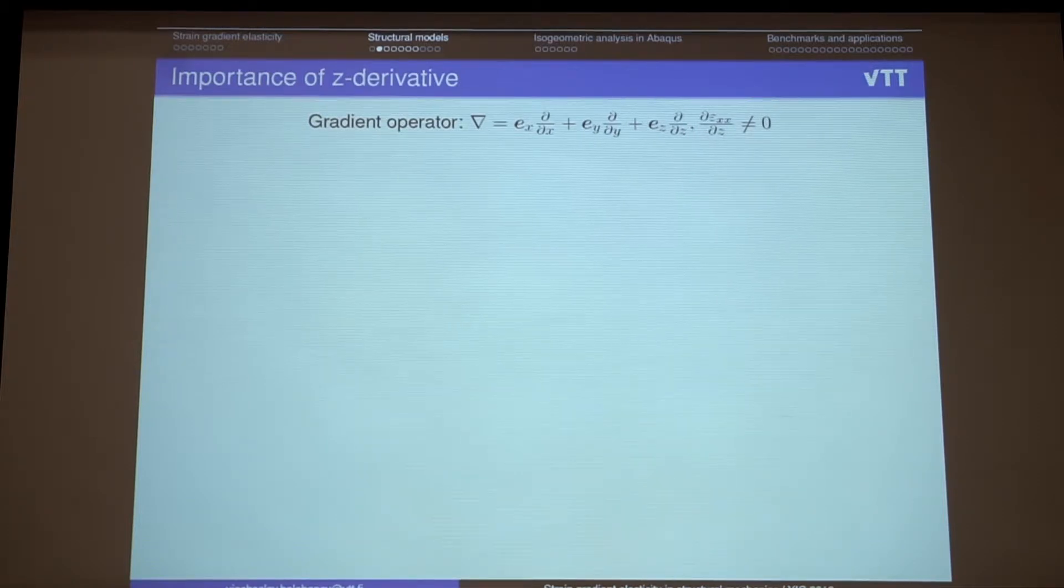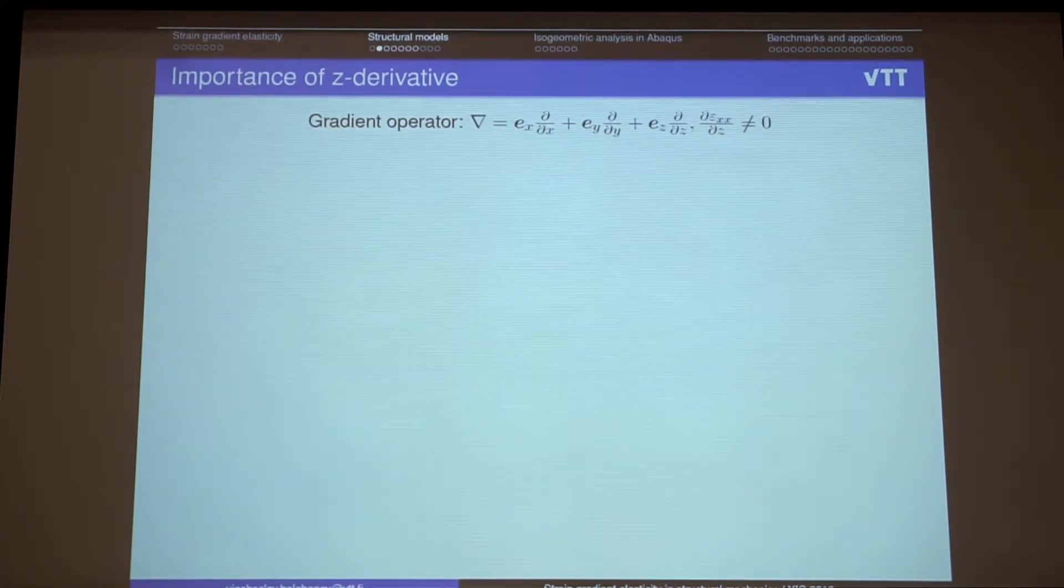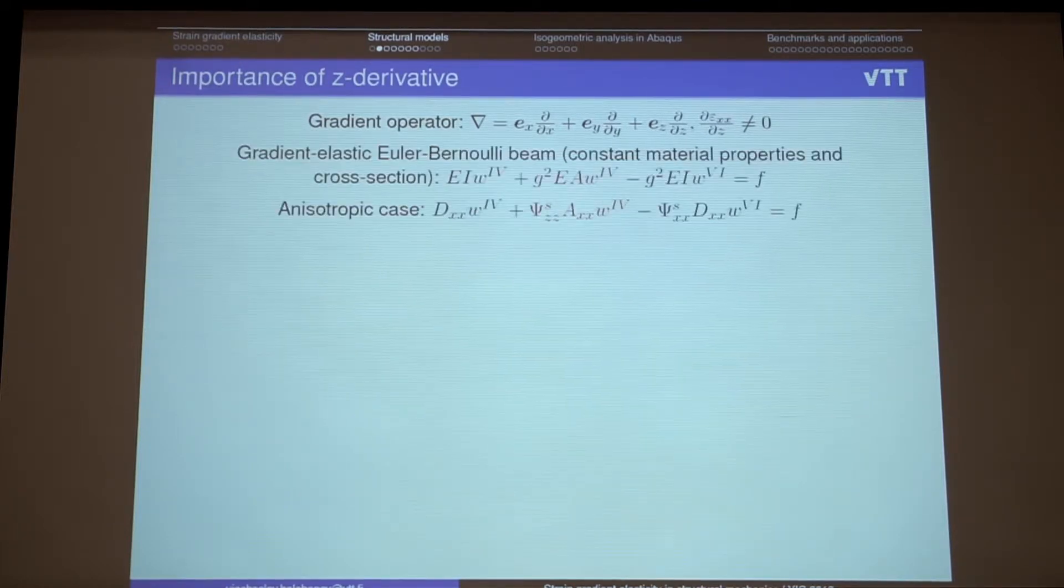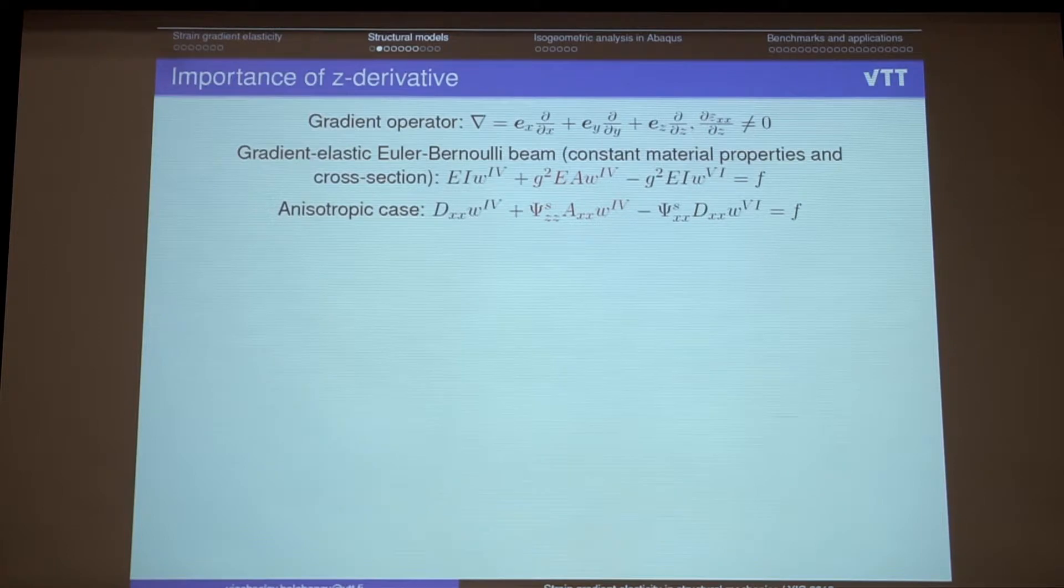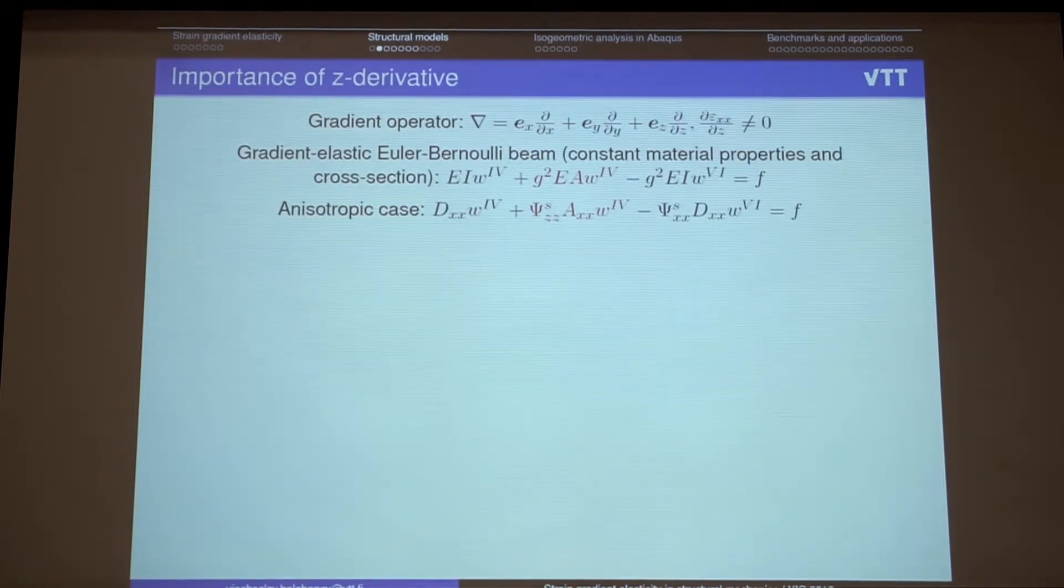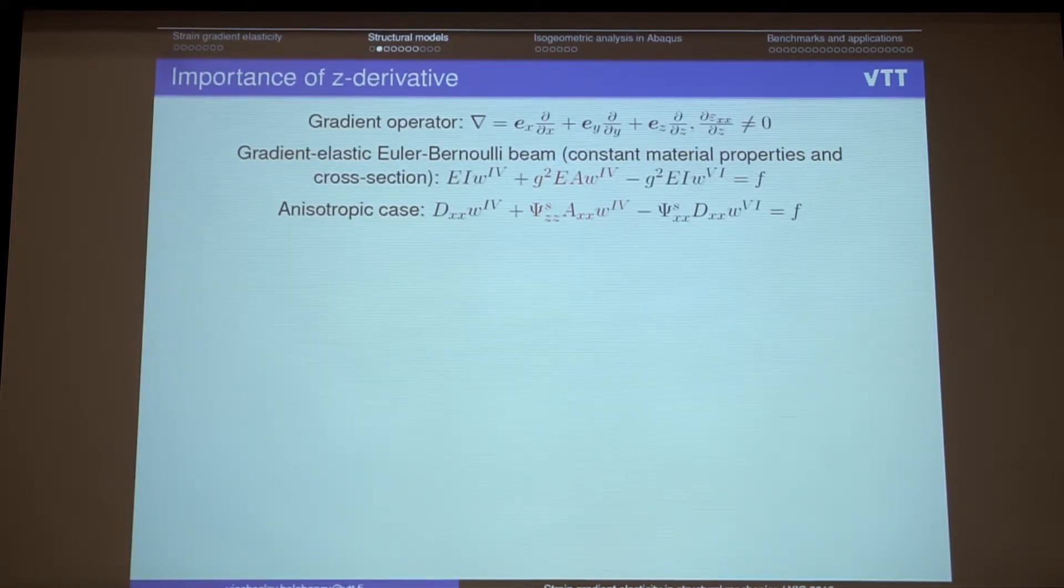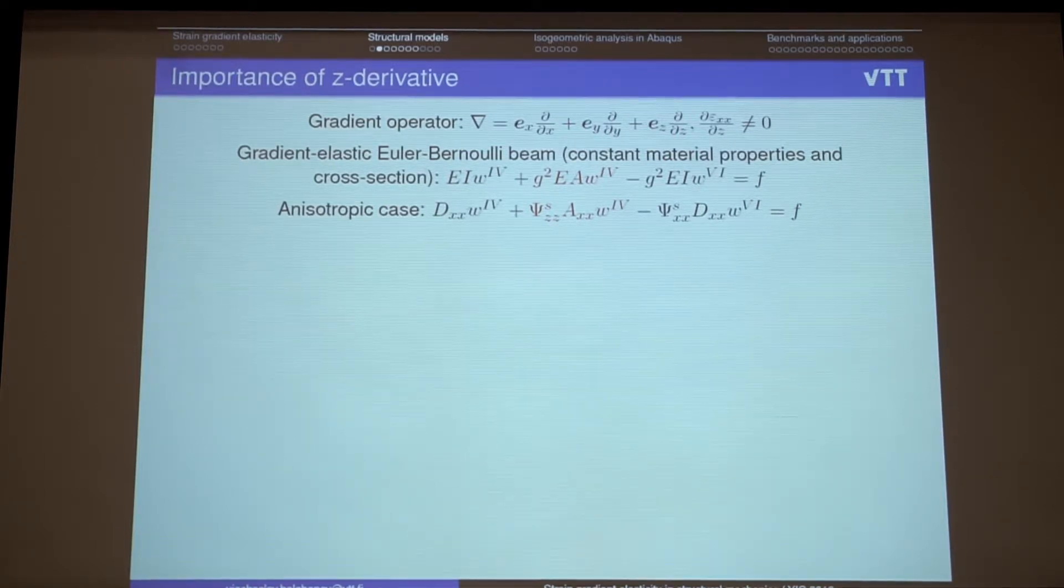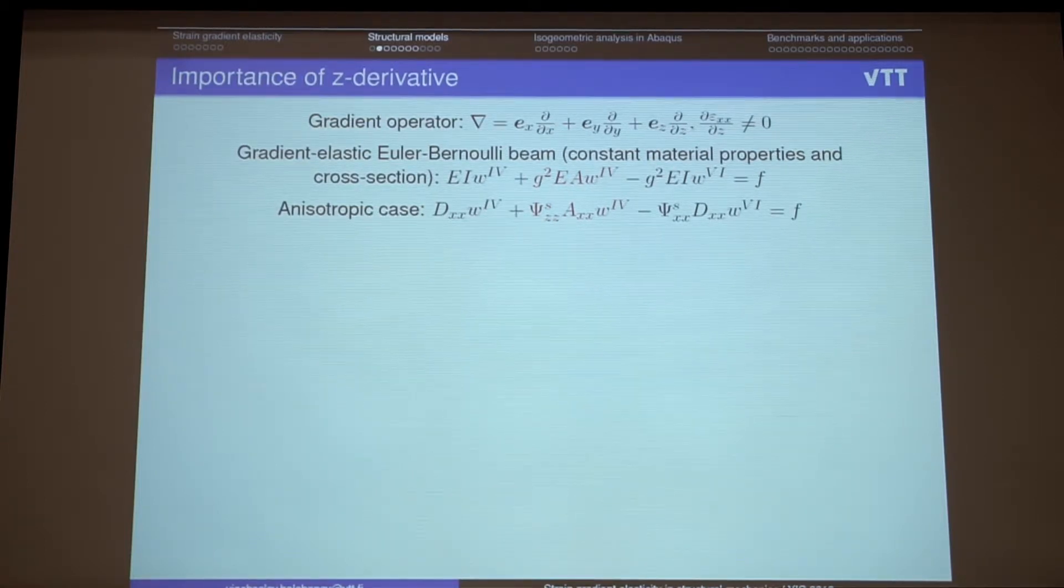Of course I don't have time to speak about all the structural models. But I tried to focus on some interesting results which were obtained. And first one is when we consider the gradient elastic Euler-Bernoulli beam model. We of course have this higher-order term relates to gradient elasticity. And usually when we consider only classic model, we don't take into account if we consider beam on 2D space. So we don't consider other derivatives in gradient operator. Just take this one. But when we work with strain gradient elasticity which we should take into account also other derivatives in other directions. And these terms are here.